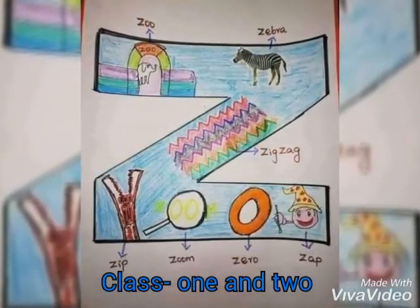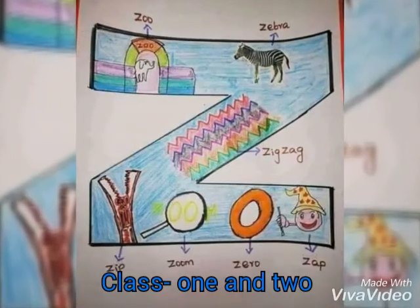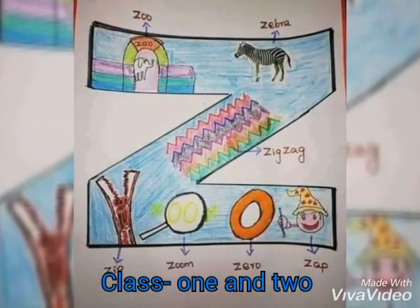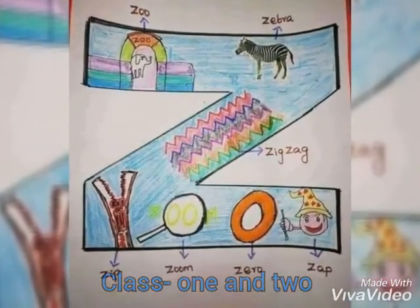Z for zoo, zoo means chiriya khana. Z for zebra, zebra means jeba.